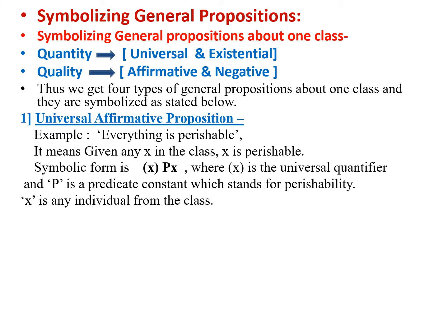First is universal affirmative proposition, where the whole class possesses the property. For example, 'Everything is perishable.' The word 'everything' indicates it is a universal proposition — given any x in the class, that member will have the property of being perishable. The symbolic form will be universal quantifier, capital P, small x, where x in the bracket is the universal quantifier, capital P is the predicate constant for 'perishable,' and small x is any individual from that class.